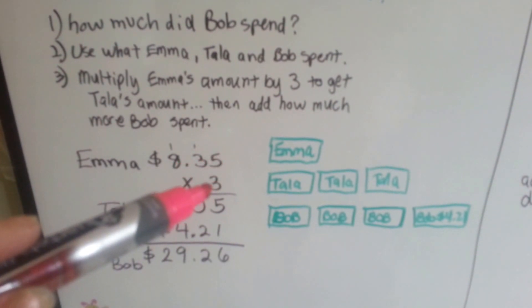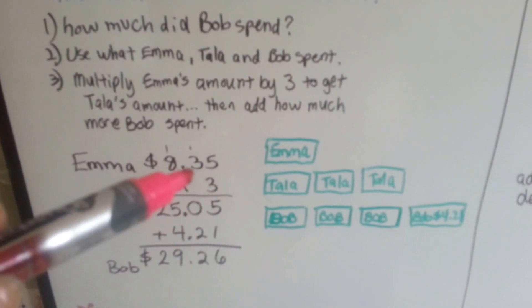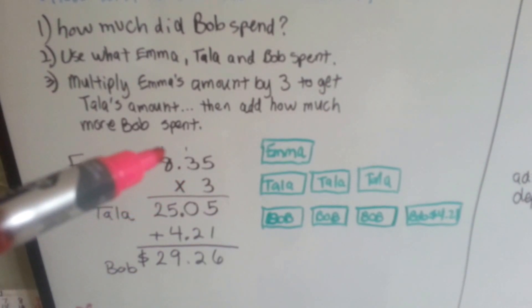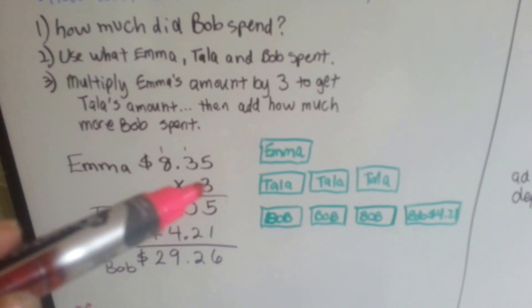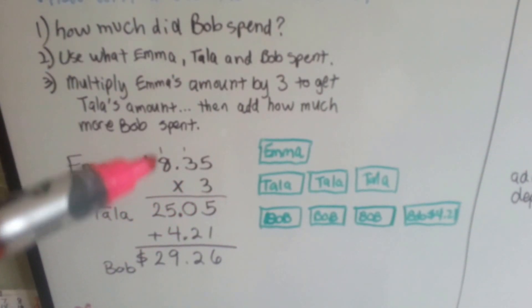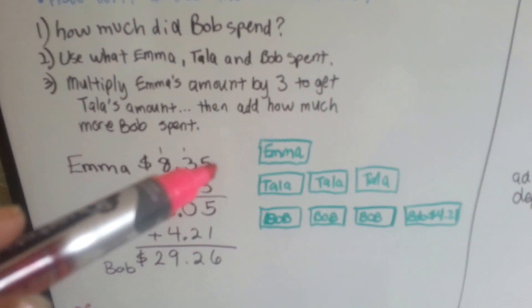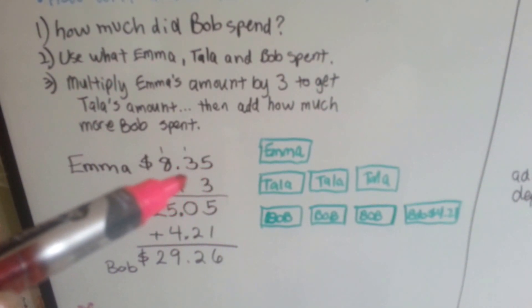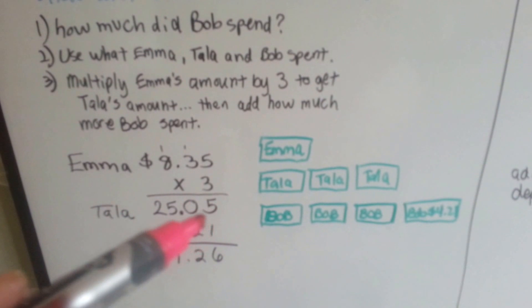Three times five is fifteen, we carry the one and put the five down. Three times three is nine plus the one is ten. We carry the one and put the zero down. Three times eight is twenty-four and one more is twenty-five. And because we hopped twice, one, two, we hopped twice in the answer. One, two.